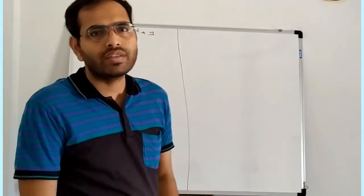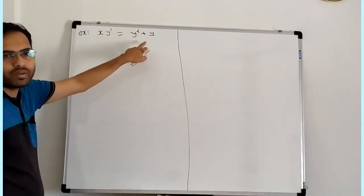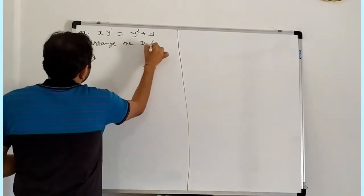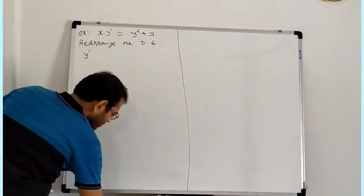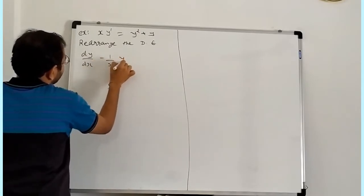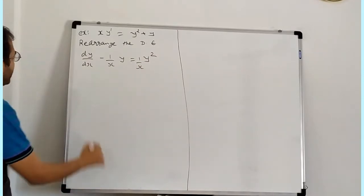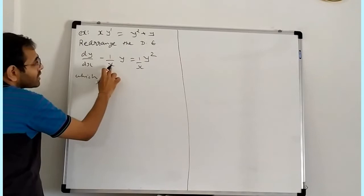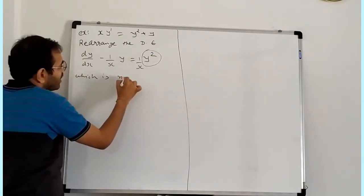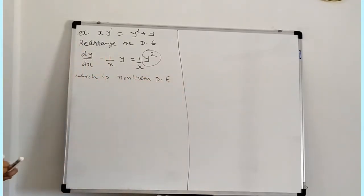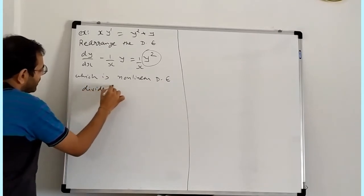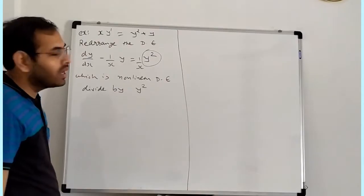Example 1: the differential equation is xy' equal to y squared plus y. First, rearrange: write dy/dx minus (1/x)·y equal to (1/x)·y squared, which is a function of y, making it a Non-linear Differential Equation. To convert to Linear Form, divide the entire equation by y squared.